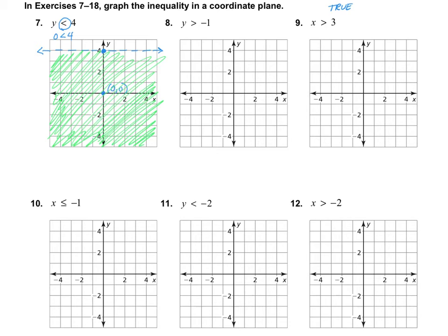Let's look at number 10: x is less than or equal to negative one. That means we cross the x-axis at negative one. It's less than or equal to, so the line is included — it's a solid vertical line. Plugging in (0, 0): zero less than or equal to negative one is false. So we shade away from that point, shading towards the left.